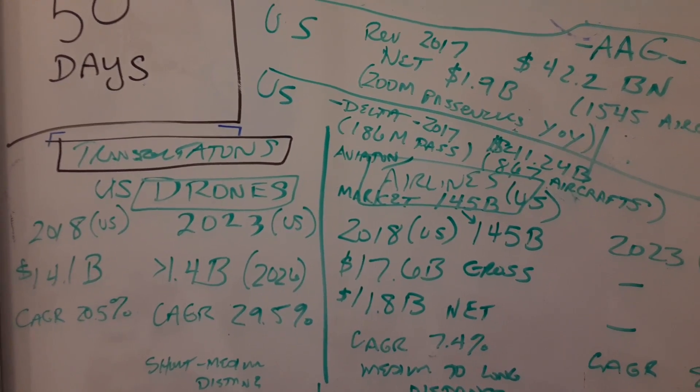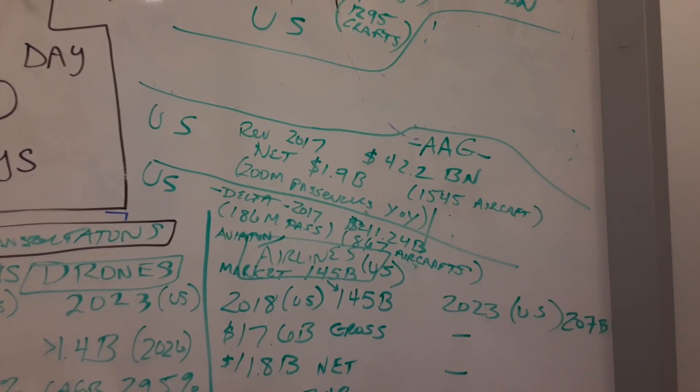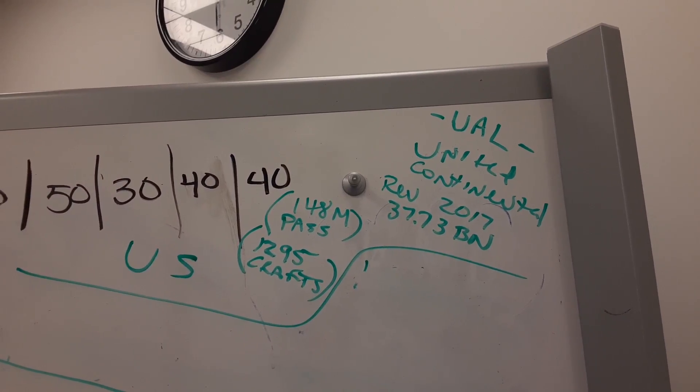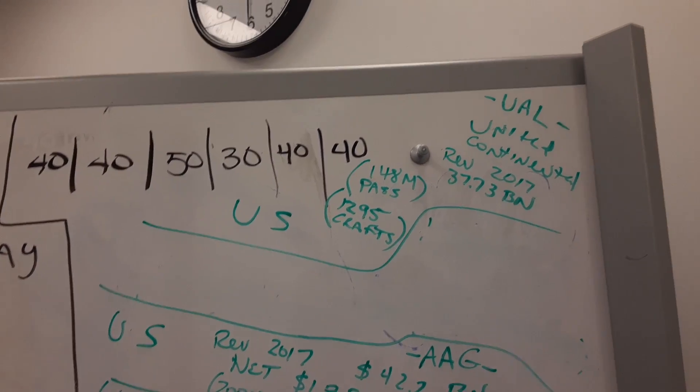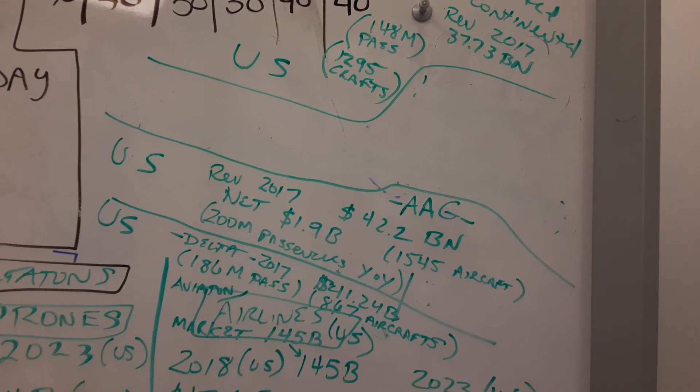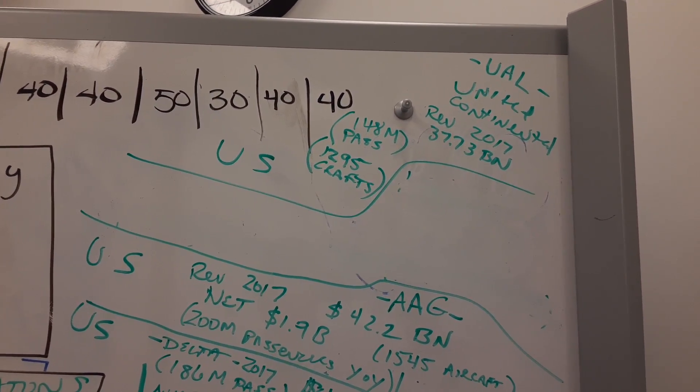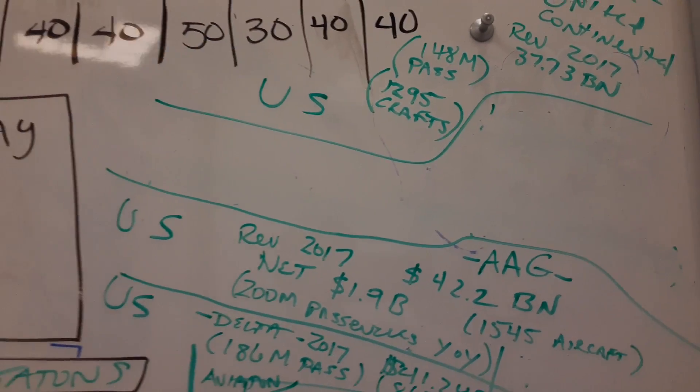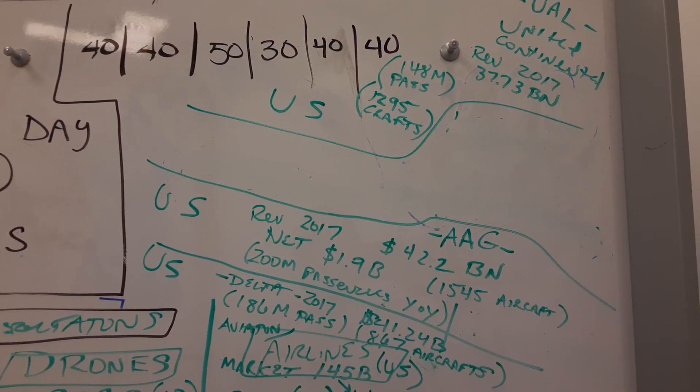The top three companies for airlines in the US: UAL, United Continental, has 37.73 billion dollars in revenue for 2017, 148 million passengers moved, and 1,295 aircraft. Next is American Airlines Group, 42.2 billion with 1,545 aircraft, moved 200 million passengers in 2017. Last is Delta, 186 million passengers, 41.24 billion, 867 aircraft on their fleet.